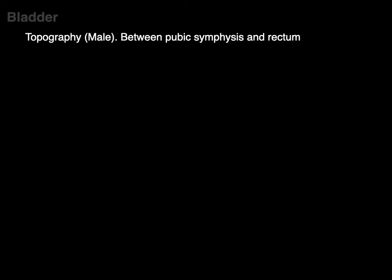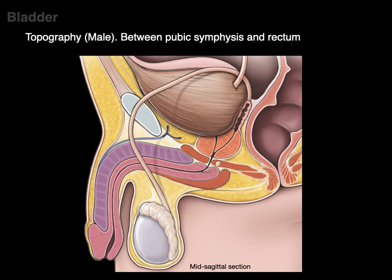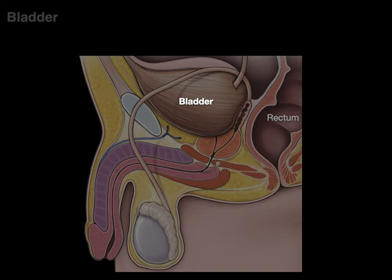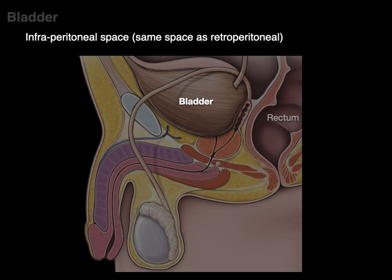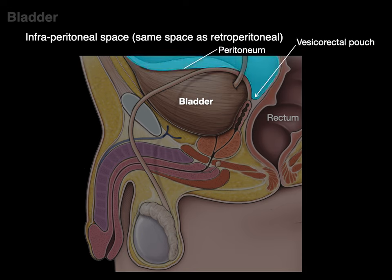The male bladder is located between the pubic symphysis and the rectum. In this midsagittal section, the bladder sits between those two structures, and it is infraperitoneal — below the peritoneum — in the same fascial plane as the retroperitoneal space. That small fold we call the vesico-rectal pouch.